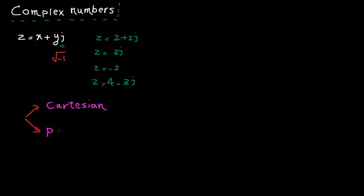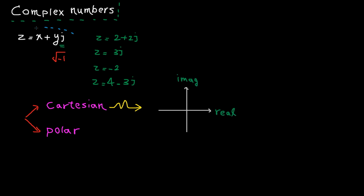Cartesian and polar form. In Cartesian representation, each number is uniquely identified by its real part and imaginary part. Basically this is Cartesian format. We have a real part x plus an imaginary part y.